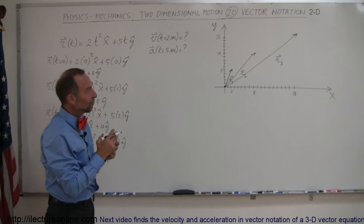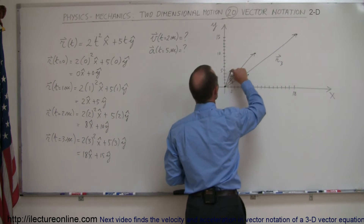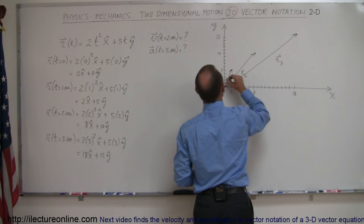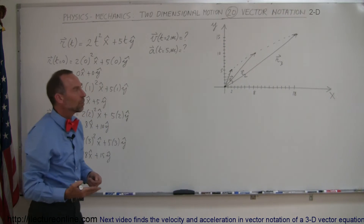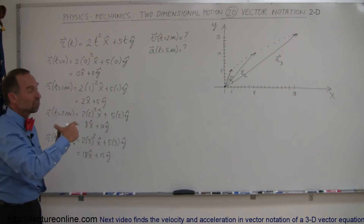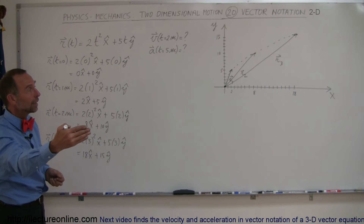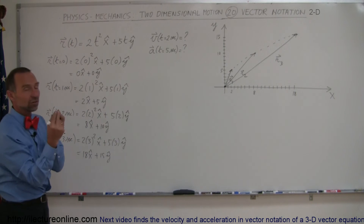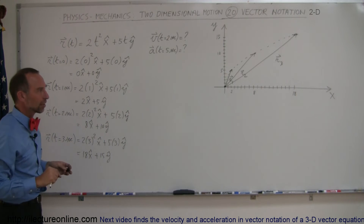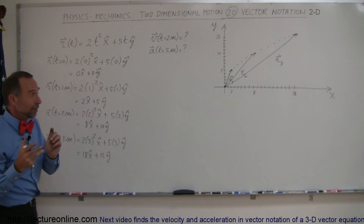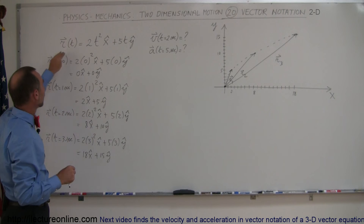You can now get a feel for the motion of this object. It goes from the origin after one second to there, to there, to there — this is the path the object is taking. Notice that in the y direction the motion seems constant: every second it's another 5 meters farther. But in the x direction it seems to be accelerating — going faster and faster, with the distance covered each second becoming greater and greater.